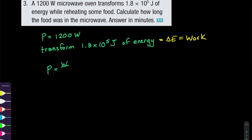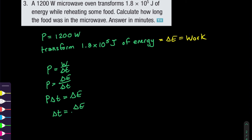Power equals work over the change in time, or in terms of electrical energy, delta E over delta T. To isolate for the change in time, we first multiply both sides by delta T, then divide both sides by the power. That operation is applied to both sides of the equation. Now let's put in the values and see what we get.